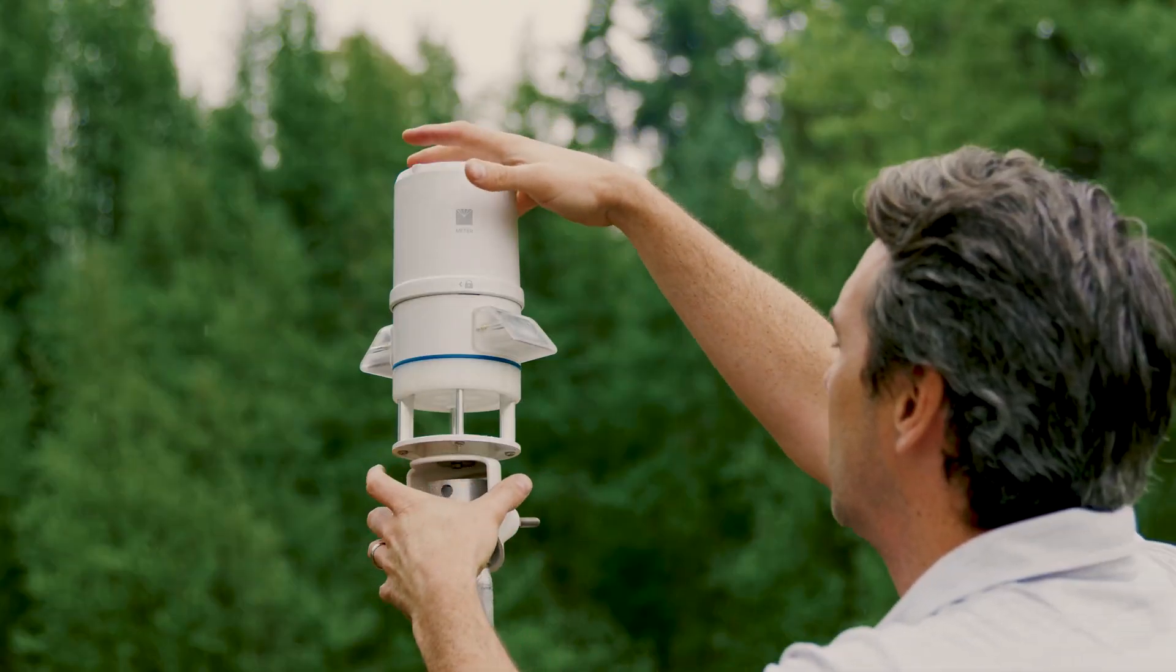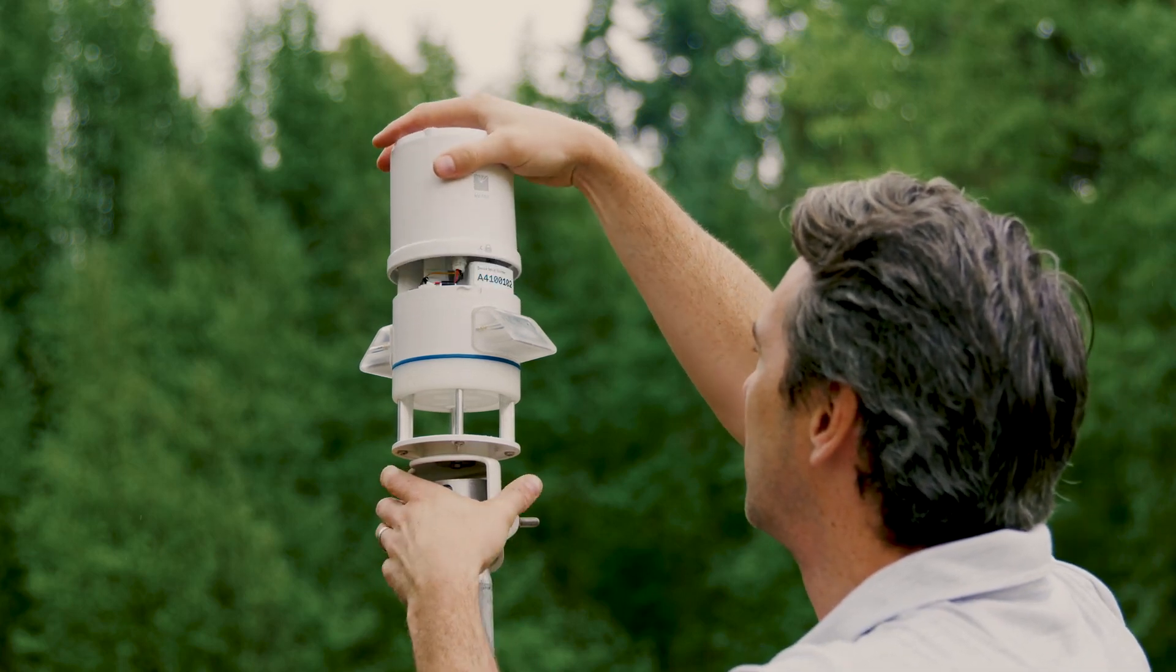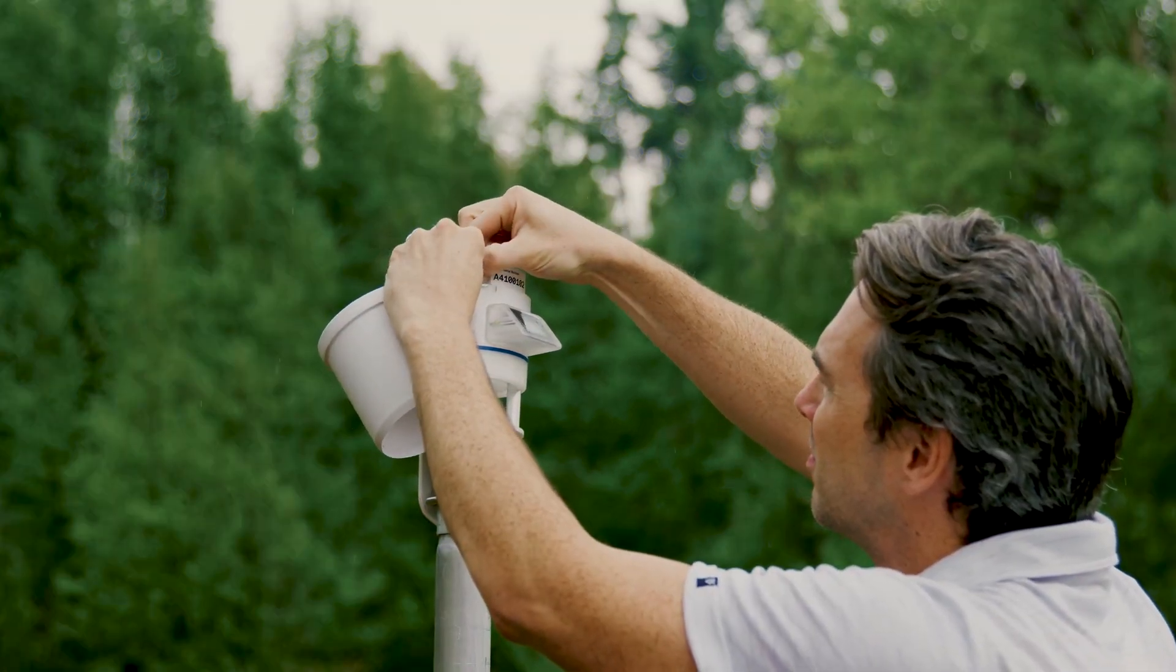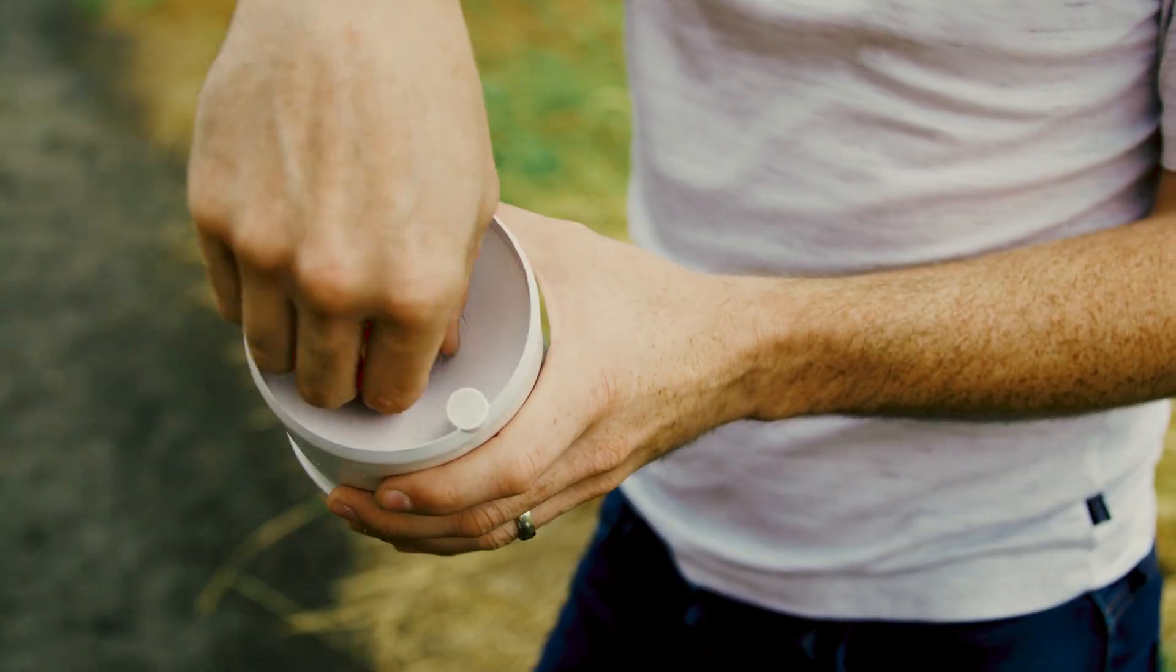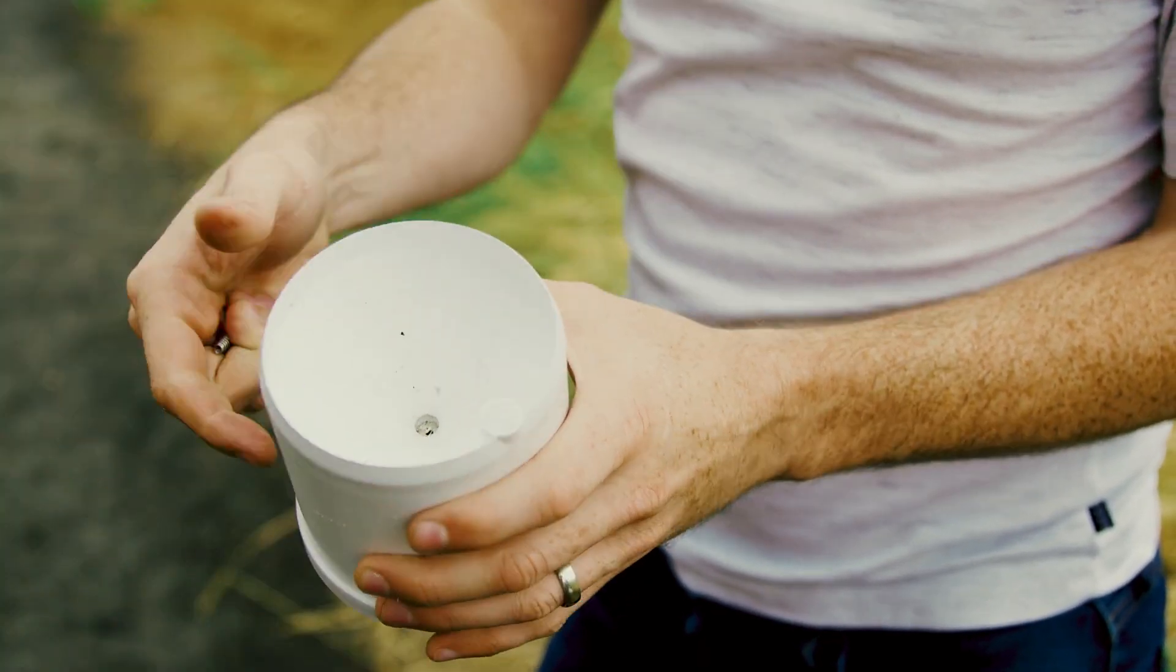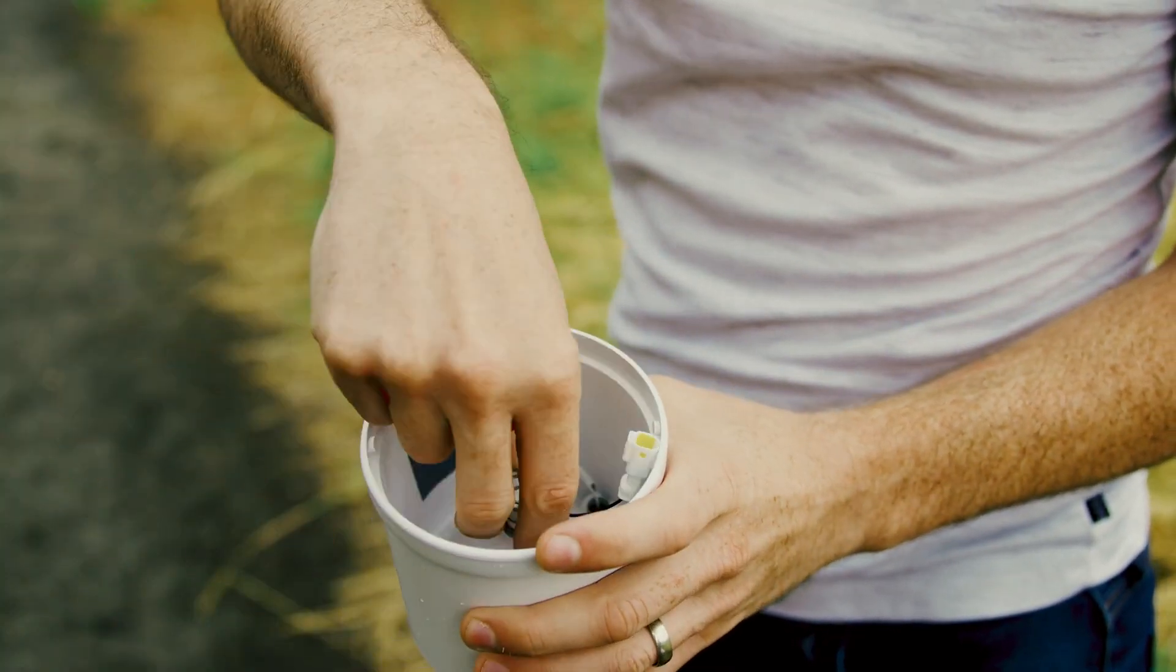First remove the funnel by pushing down and turning counterclockwise then disconnect the perinometer cable. Remove the springs from the top and bottom of the funnel by pulling them out and set them aside.